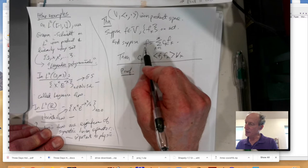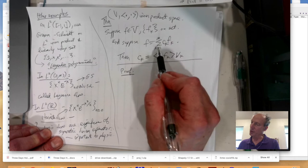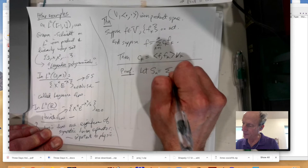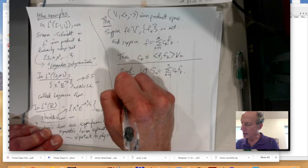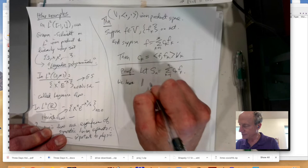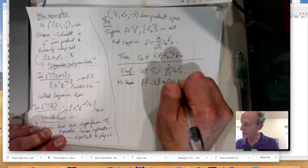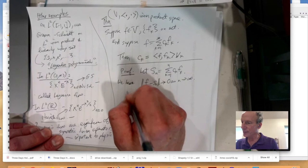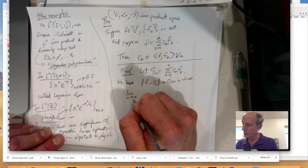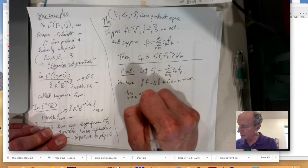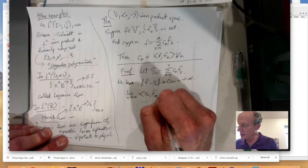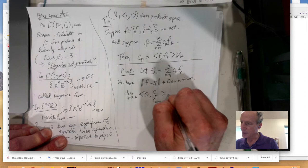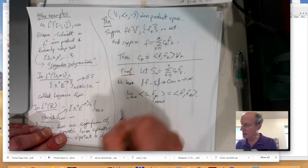So, let's look at the proof of that. Okay. Well, first of all, that this equals that means that this sum converges to this function. So, we're going to let SN equal the sum from K equals 1 to N of CKFK. And we have that, the L2 norm, I mean, or the inner product norm of F minus SN goes to 0 as N goes to infinity. Right?